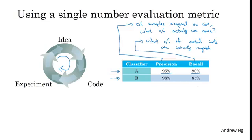The problem with using precision and recall as evaluation metrics is that if classifier A does better on recall, which it does here, but classifier B does better on precision, then you're not sure which classifier is better. And if you're trying out a lot of different ideas with different hyperparameters, you want to really quickly try out not just two classifiers, but maybe a dozen classifiers and quickly pick out the best one, so you can keep on iterating from there.